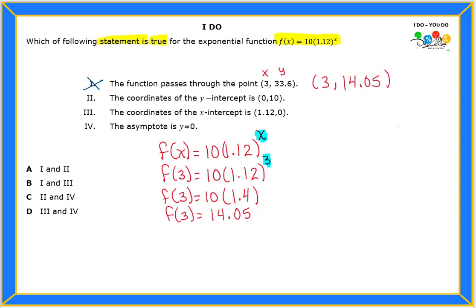What about the second one? It says the coordinates of the y-intercept is (0, 10). I'm gonna replace x with zero. What happened when you raise anything to the zero power? We get 1, so f(0) is gonna be 10. This 10, which is 'a', is actually the y-intercept. So 'a' is my y-intercept and my second statement is correct. This one is true.